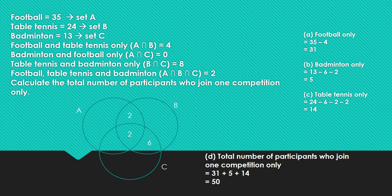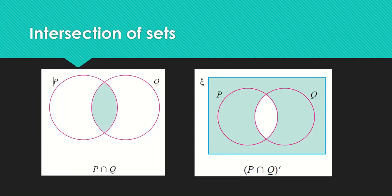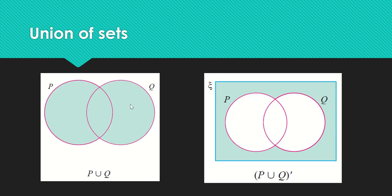We have reached the end of the chapter. Let's look at the summary of what we have learned. First, we learned intersection of sets — set P intersect set Q is the area in the middle. We also learned the complement of P intersect Q, which is the area outside the intersection part. Next, we learned about union of sets — P union Q covers all the area included, whereas the complement of P union Q is the area outside P union Q, shown as the green colored area.